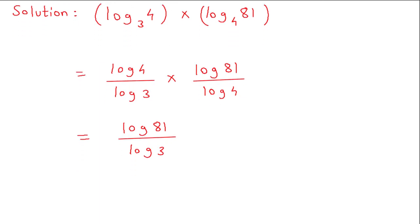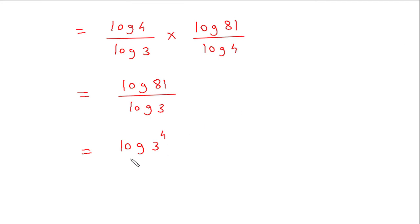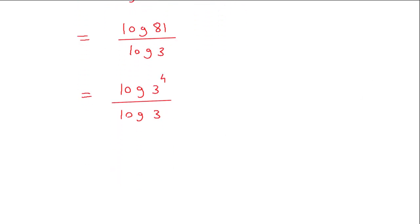Now we can write log of 81 as log of 3 to the power 4 divided by log of 3. Using the logarithmic power rule, this becomes 4 log of 3 divided by log of 3.